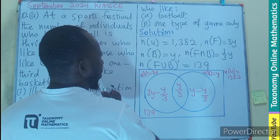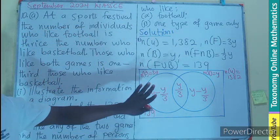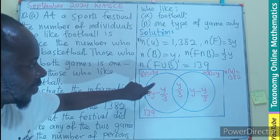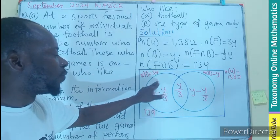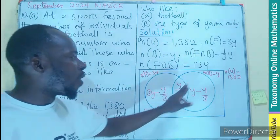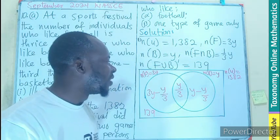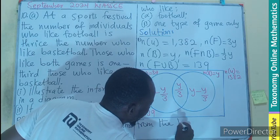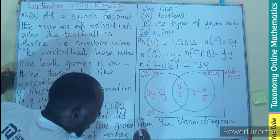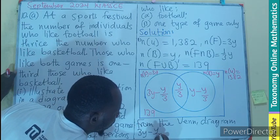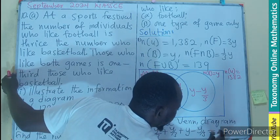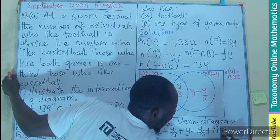Roman numeral one is represented in this form — we are done with the first part. For the second part, we have to find the number who like football. Football means our 3y. We also need to find those who like only one type of game. Region one plus region two plus region three plus the complement should equal the universal set, so: (3y − y/3) + (y/3) + (y − y/3) + 139 = 1382.